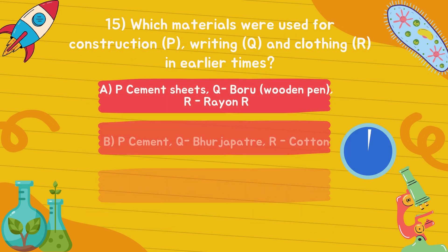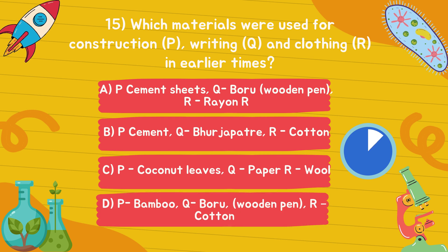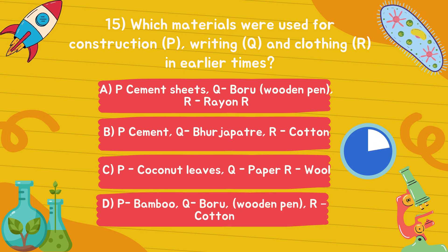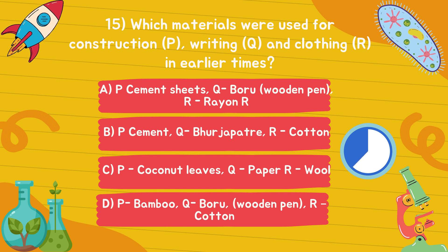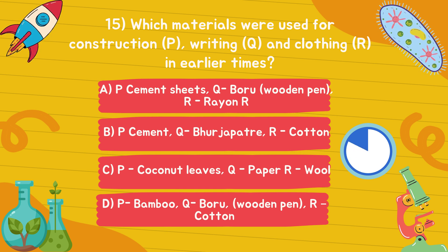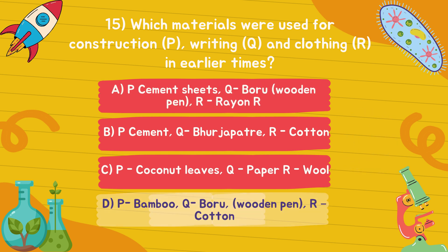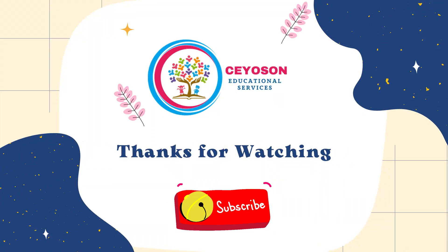Which materials were used for construction (P), writing (Q), and clothing (R) in earlier times? Answer is option C: P, bamboo; Q, boru (wooden pen); R, cotton.